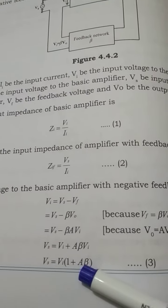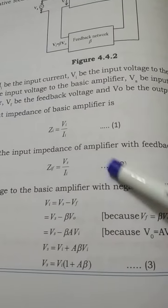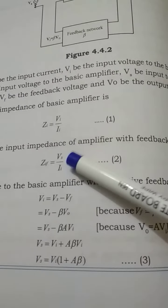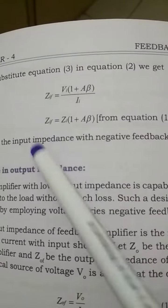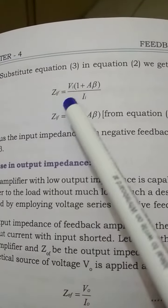This value of Vs, let us substitute back in Zif. When you substitute back in Zif, we get Zif (the input impedance with feedback) equals Vi times (1 plus A*beta) divided by Ii. Now, this Vi by Ii is nothing but equal to Zi, the input impedance without feedback.